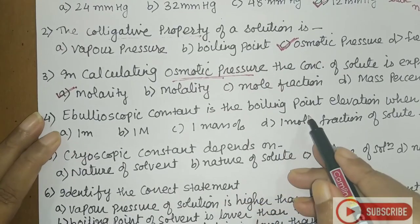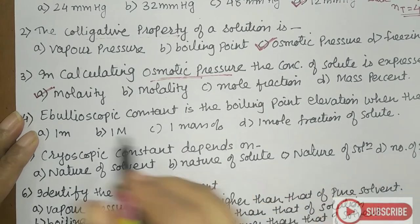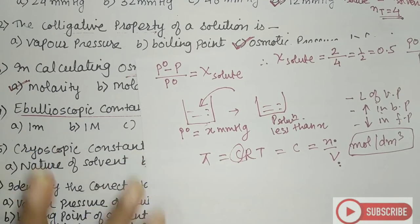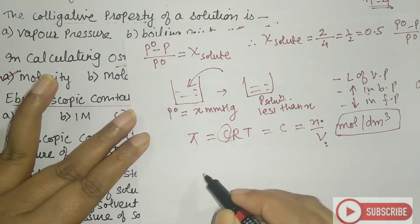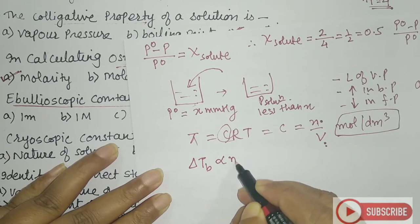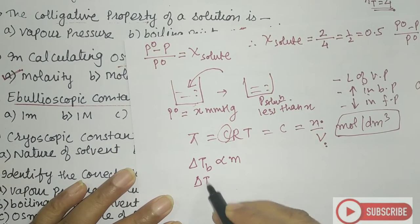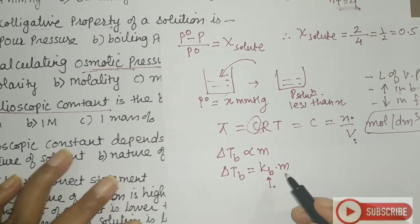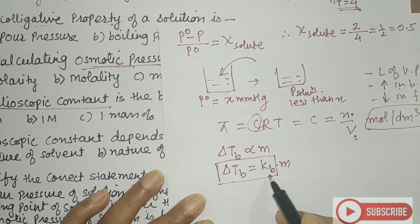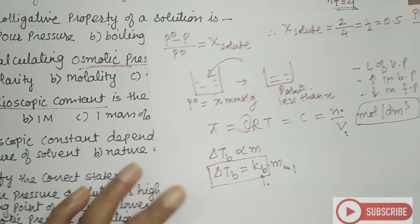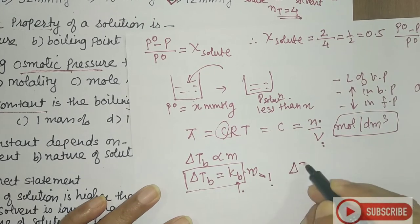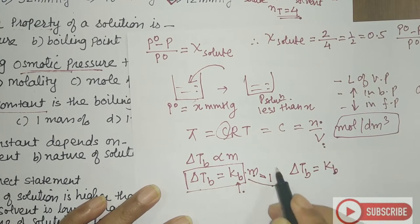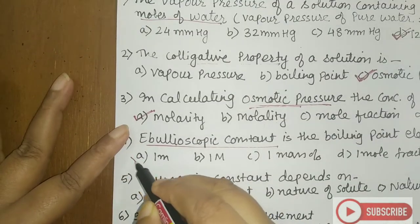Ebullioscopic constant is the boiling point elevation when the concentration of the solution is — let's see the equation: ΔTb = Kb × m. When the elevation in boiling point equals the ebullioscopic constant, molality must equal 1. So the answer is 1 molal.